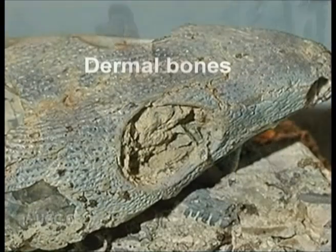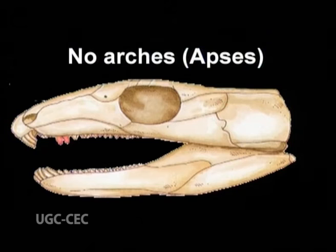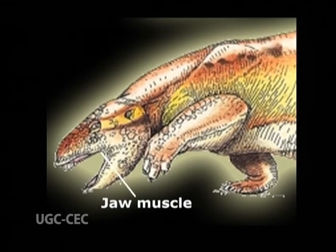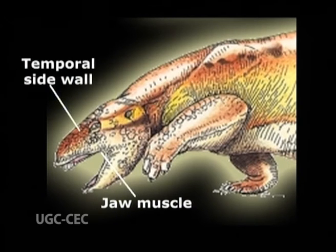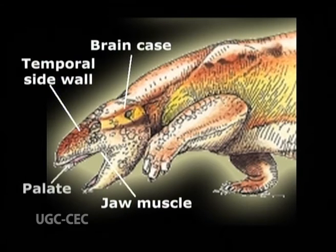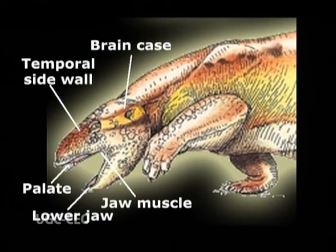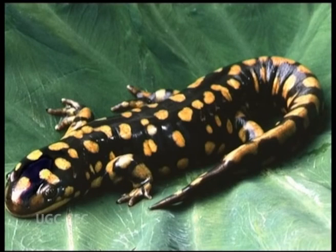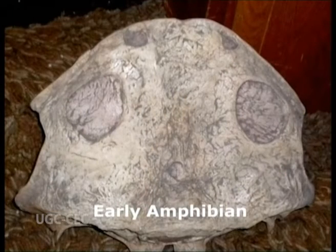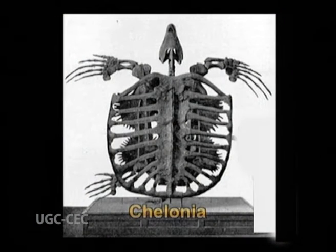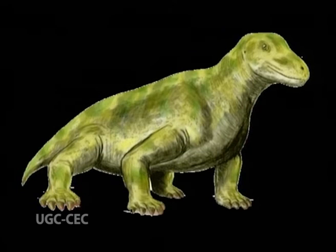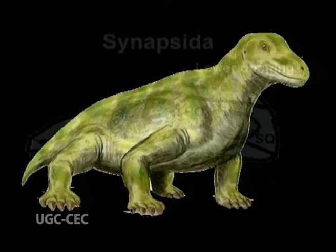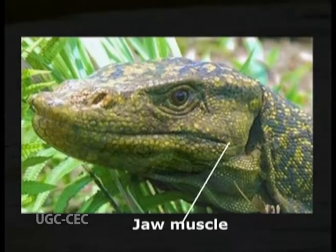In Cotylosauria, the dermal bones of the temporal region presented an unbroken surface with no temporal fossae, and therefore no arches or absences of bone in the temporal region. The jaw muscles took origin from the deep surface of the temporal side wall between it and the brain case, and passed down through holes in the palate to be inserted on the lower jaw.